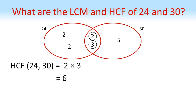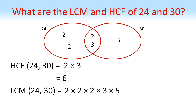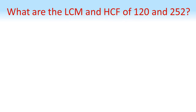For the lowest common multiple, we multiply all of the factors in the Venn diagram. That's three 2's, times 3, times 5: 2 × 2 × 2 × 3 × 5, giving us a lowest common multiple of 120.